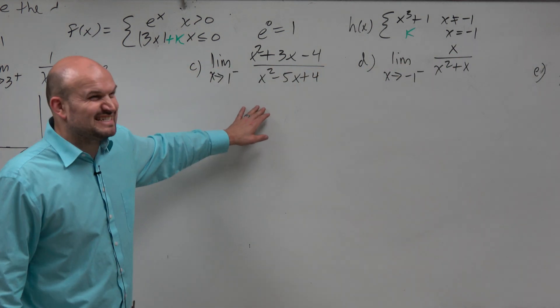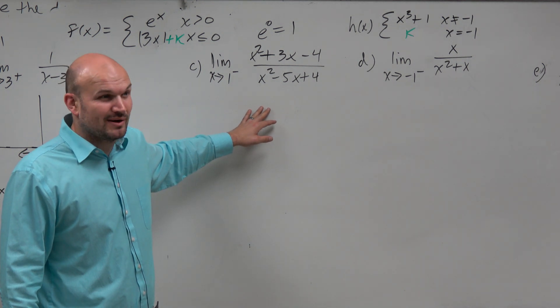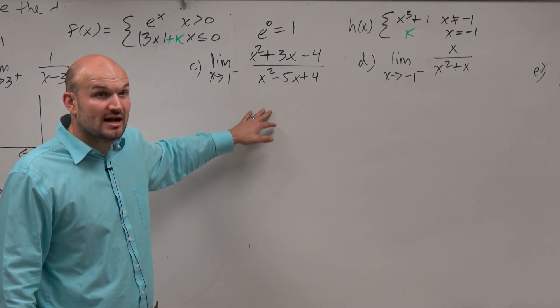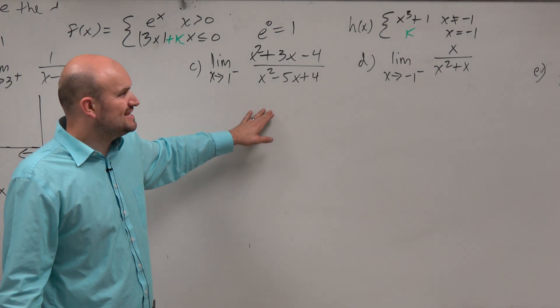Now, it might not be as obvious if there's holes or asymptotes going on here, right? But we see a trinomial.